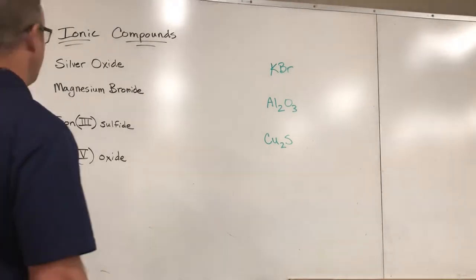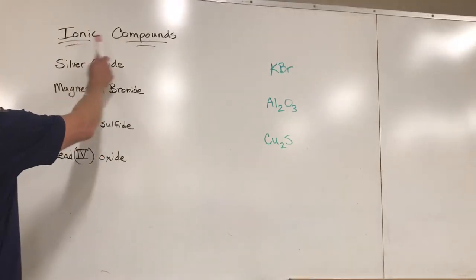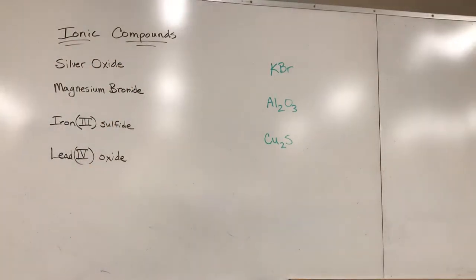In this video we're going to take a look at how to write names and formulas for basic ionic compounds. In a later video we'll take a look at how to deal with polyatomic ions. In this one we're just going to analyze monatomic ions, which means basically one metal with one non-metal, single atoms.